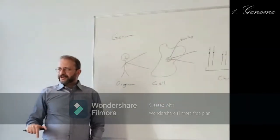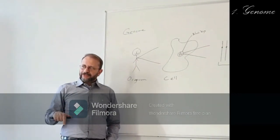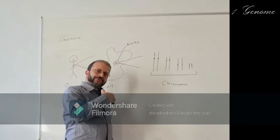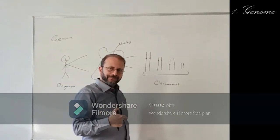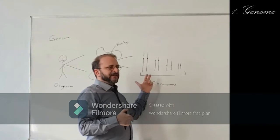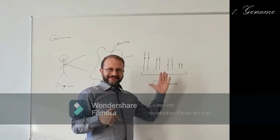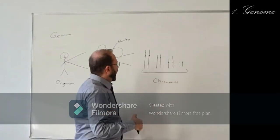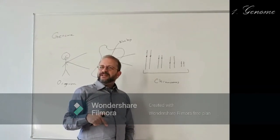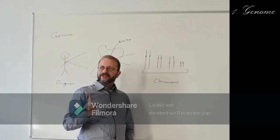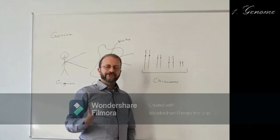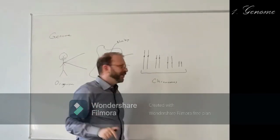But remember, in prokaryotes it's only one DNA molecule, and it's circular — it's not linear. So the genomes of eukaryotic cells are organized as chromosomes and in separate DNA molecules, because every chromosome is one DNA molecule. One chromosome equals one DNA molecule.